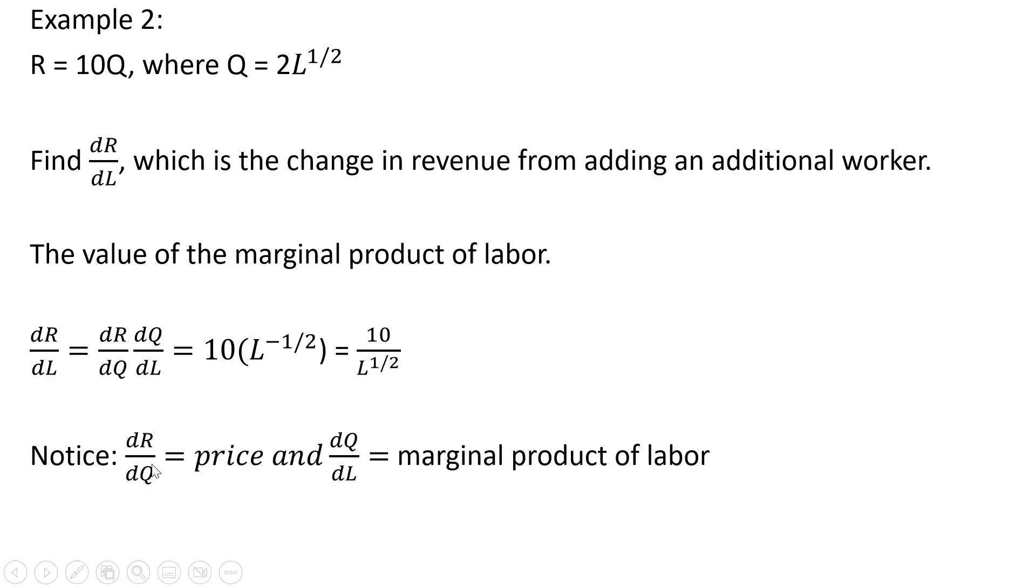You'll notice here that the derivative of the revenue equation with respect to q is just a price, so in perfect competition, we just get the price when we do that. And then the derivative of the production function with respect to l is the marginal product of labor. So price times the marginal product of labor is the value of the marginal product of labor. So we backed into that by using the chain rule.